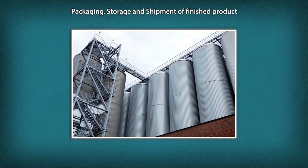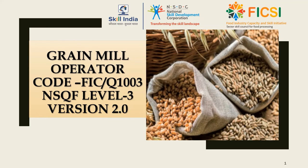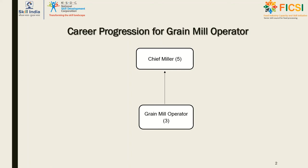Bulk storage capacity varies widely, but mostly mills have bulk flour storage from 2 to 4 days. Grain Mill Operator code FICQ1003, NSQF Level 3, Version 2. A grain mill operator can obtain training for chief miller at a higher NSQF level as vertical progression, and increase his or her scope in the milling subsector by adding more product portfolio in the existing catalogue, or can make himself or herself eligible to work in all kinds of cereal-based milling units.